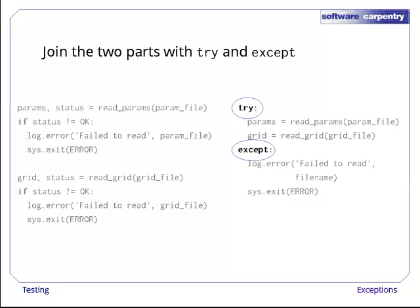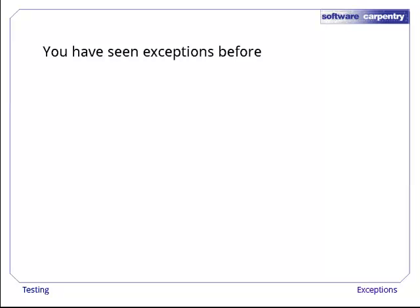To join the two parts together, we use the keywords try and except. These work together like if and else. The statements under the try are what should happen if everything works, while the statements under except are what the program should do if something goes wrong.